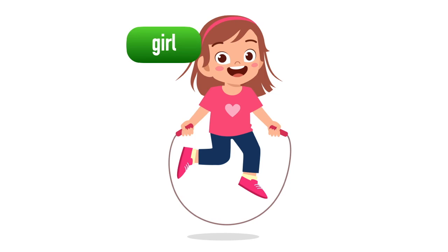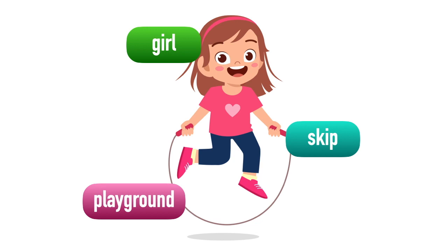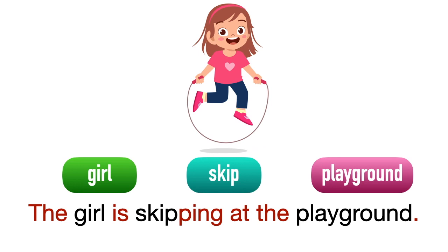The girl — people is girl, action is skip, place is playground. The girl is skipping at the playground.